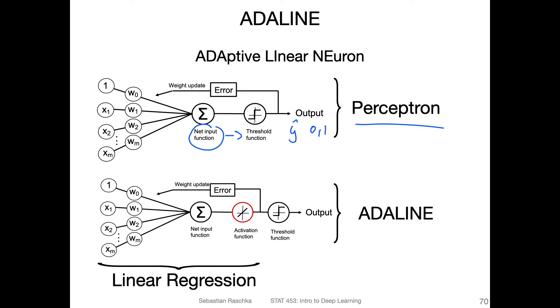If the prediction matches the actual label for that given training example, then we don't do anything. But if it doesn't match, if it's different, then we have this error term that we computed.